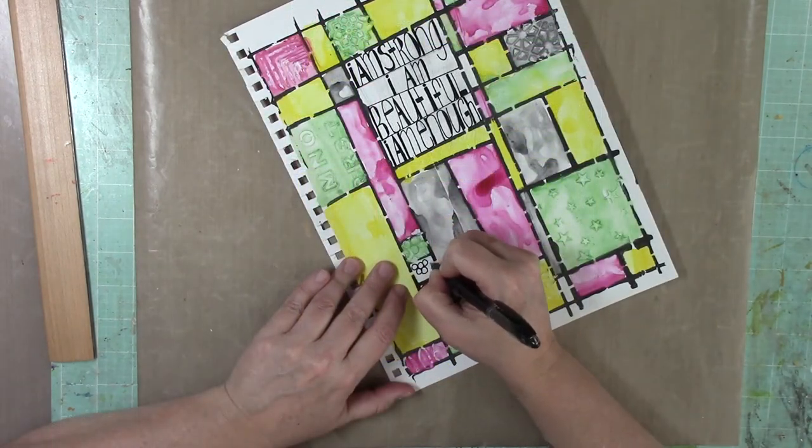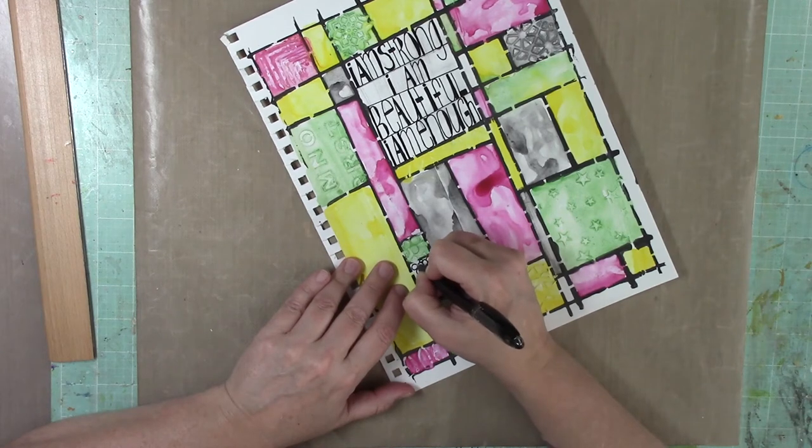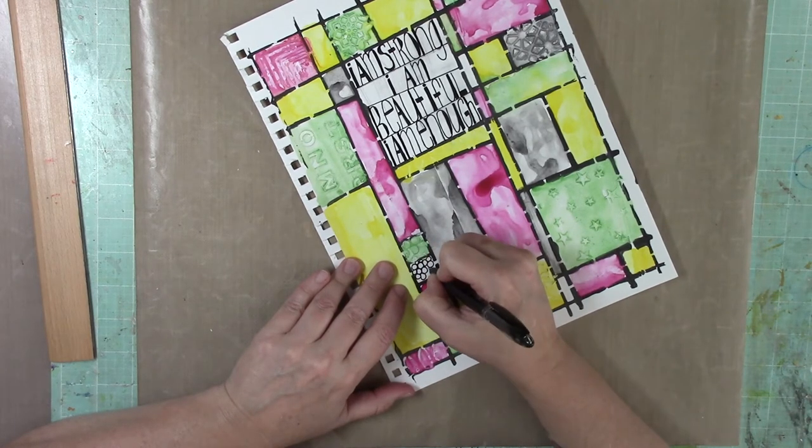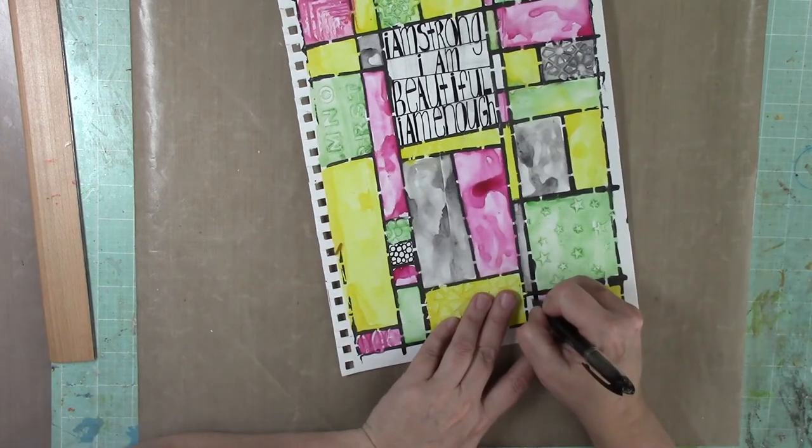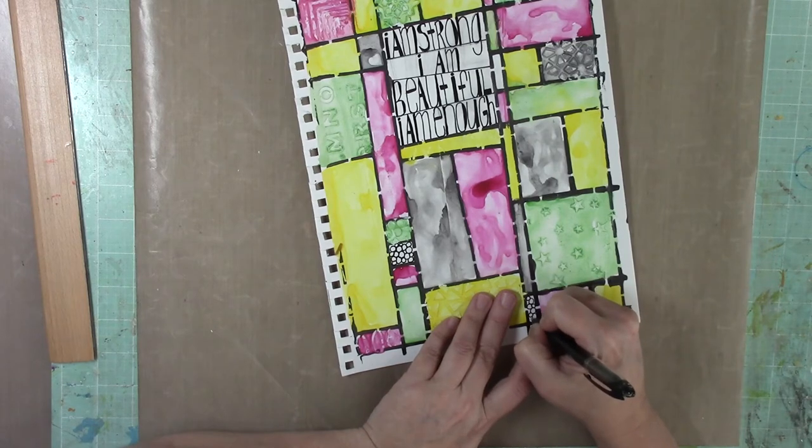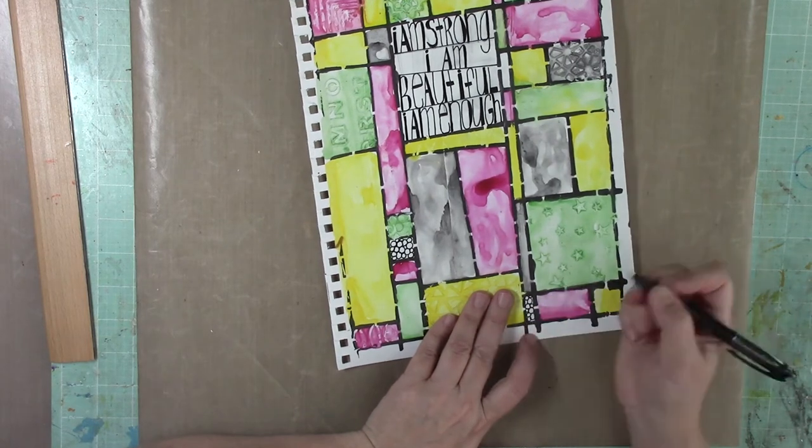I left some of the squares open, the white squares, and I'm just doodling in some circles. It just created a different look to it. Instead of using the heavy gesso as texture, I'm just using the doodles as more interest. I'm doing it kind of in a triangle mode with the three different squares with the doodles.